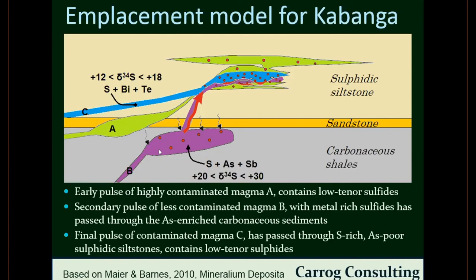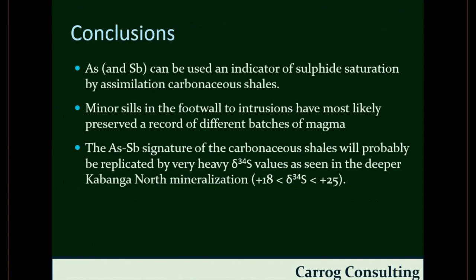This arsenic and antimony signature is acting as an indicator of the high-tenor sulfides that enriched the earlier-formed pools of massive sulfide from the A magma. And this could form part of an exploration method for differentiating and exploring for intrusions with higher tenor that are likely to be economic in the area. Thank you very much.